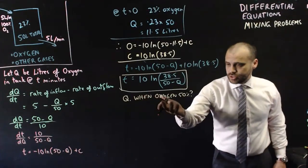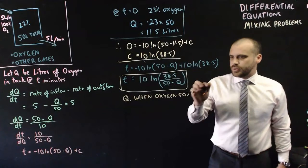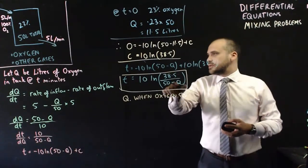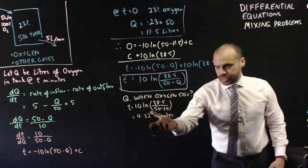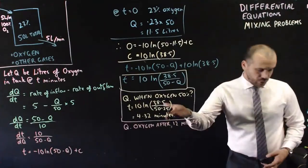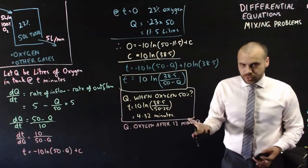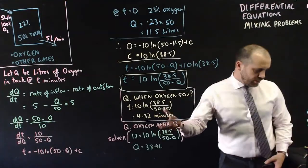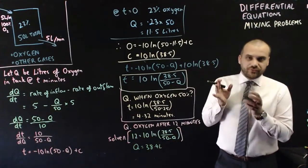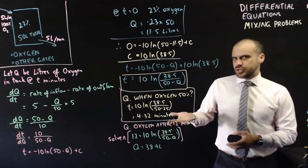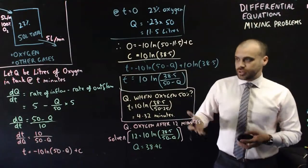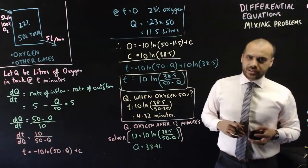So if the question was, when is the oxygen 50%, then we just need to sub in, not 50%, but we need to sub in 25 for Q. And when I do that, I find out that that's going to happen at 4.32 minutes. If the question was, how much oxygen after 12 minutes, we're just subbing 12 in for t and solving it. Now I've cheated here a little bit. Use my calculator. Q equals 38.4 litres. If you wanted to know the concentration, obviously you're doing 38.4 over 50, which is a decent question that you might get asked here.